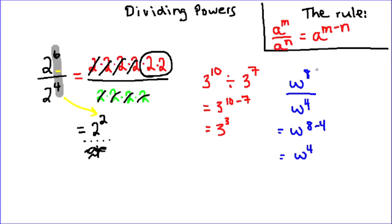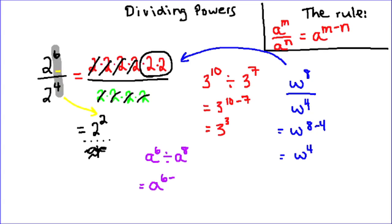Just by subtracting the exponents when the base is the same, we can simplify. Let's try one more that will lead into the next rule. If I have a to the power of 6 divided by a to the power of 8, that equals a to the power of 6 minus 8, which is a to the power of negative 2. That gives us a negative exponent, which we're going to take a look at in our next tutorial.